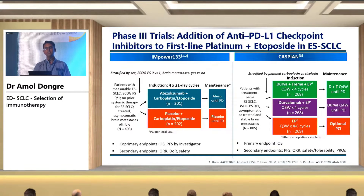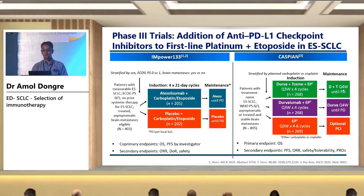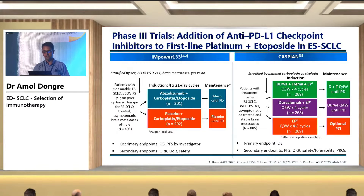Similarly, the CASPIAN trial is a phase 3 trial with Arm 1: durvalumab plus tremelimumab plus etoposide/cisplatin every three weeks for four cycles; Arm 2: durvalumab alone with etoposide; and Arm 3: etoposide/cisplatin alone. Followed by maintenance: Arm A — durvalumab plus tremelimumab every four weeks until progression; Arm B — durvalumab alone every four weeks until progression; Arm C — chemotherapy only with optional PCI. The primary endpoint is overall survival; secondary endpoints are PFS, overall response rate, safety, and tolerability.